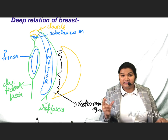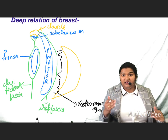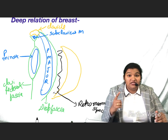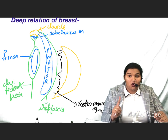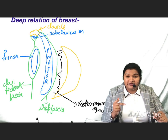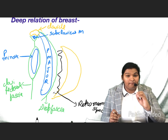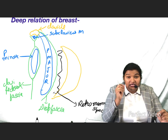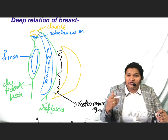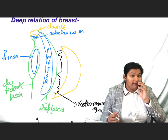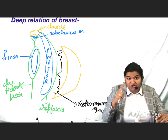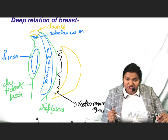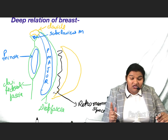The retromammary space has clinical significance because in malignant breast cancer, this space is obliterated. Because of this retromammary space, the breast is mobile — you can move the breast in all directions. But when the retromammary space gets obliterated in malignant breast cancer, you cannot move the breast and there is fixity of breast tissue. In mammography, you can appreciate the retromammary space, and also its obliteration in case of malignant breast cancer.